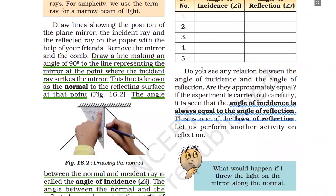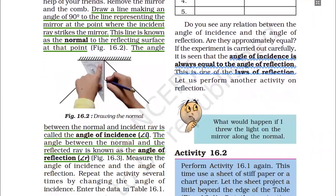Next, we discussed the normal — a line at a 90-degree or right angle representing the mirror at the point where the incident ray strikes the mirror. This line is known as the normal to the reflecting surface at that point.